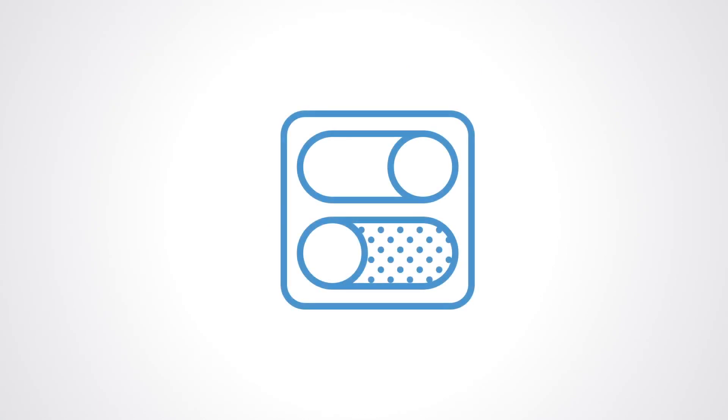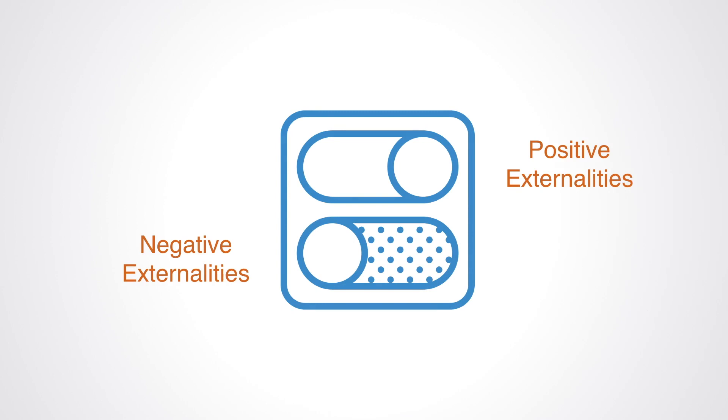Ultimately, the question is how do we switch our systems from creating these externalities to solving them? From creating negative externalities that lead to systemic risk to patterns that create positive externalities and build systems-level resilience.